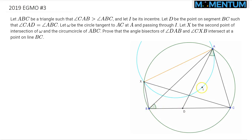We also know that I is the incenter of triangle ABC, and lastly we draw a circle which is tangent to side AC at the point A and which also goes through the incenter I.